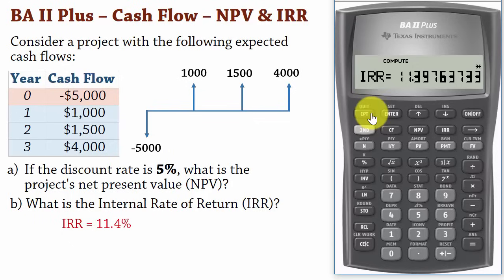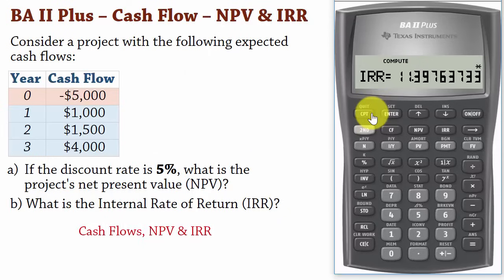Since IRR is 11.4%, which is greater than 5%, the discount rate, this also tells us to accept the project, otherwise we will reject it. And that's Cash Flow's NPV and IRR on the BA II Plus calculator.